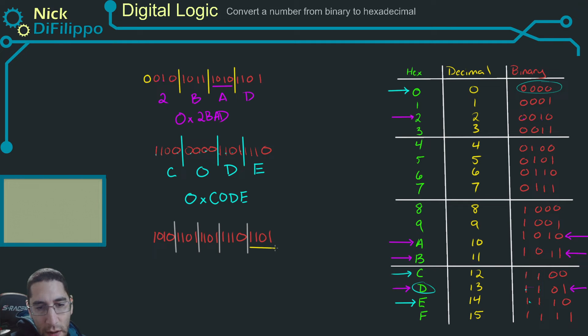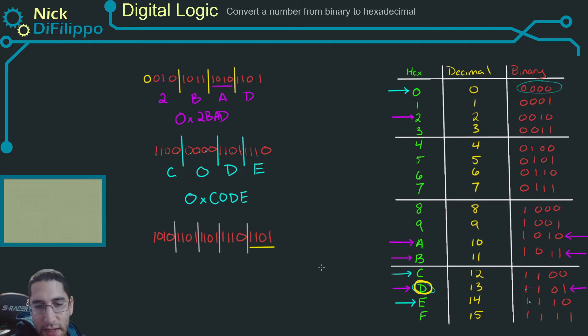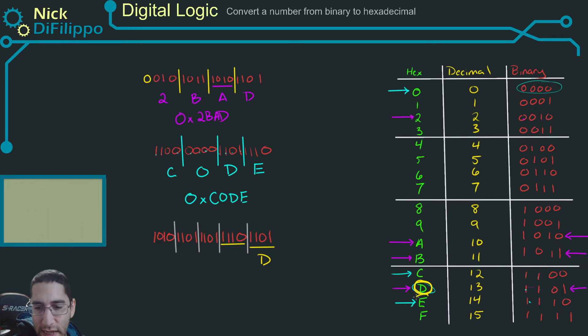We look at 1101, which is a D. Then 1110, which is an E.